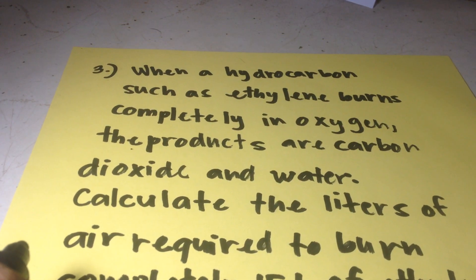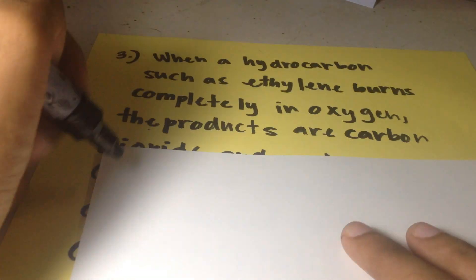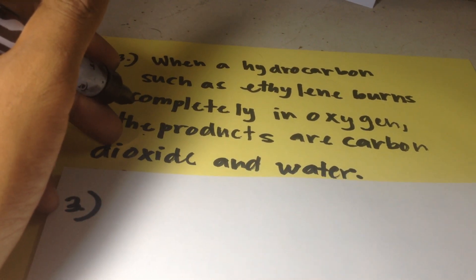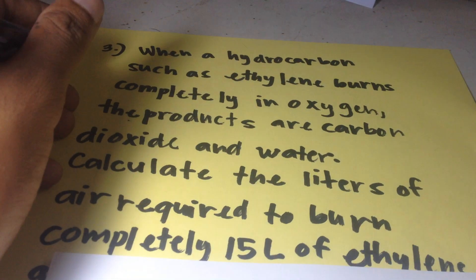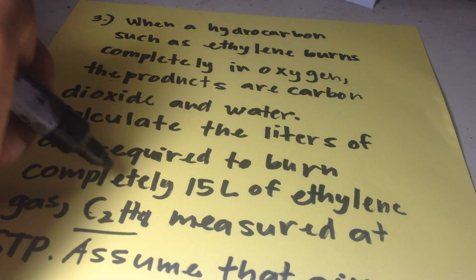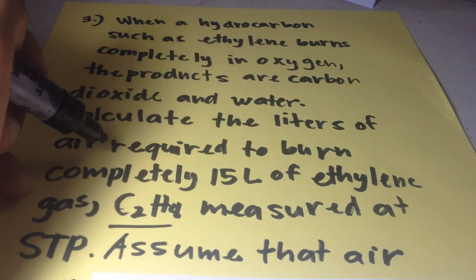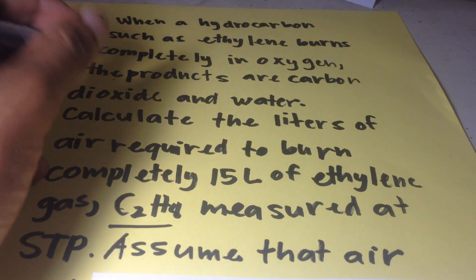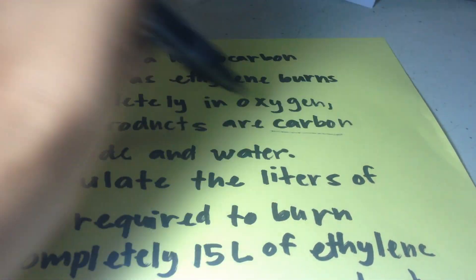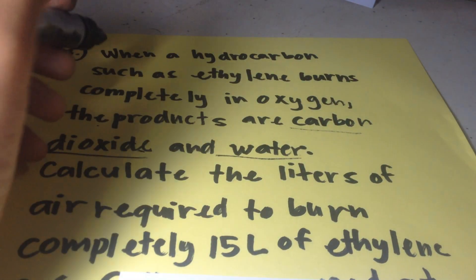Let's make a reaction first. We need to write the reaction, which is C₂H₄, the ethylene gas, which is burned completely in air. The products are carbon dioxide and water.